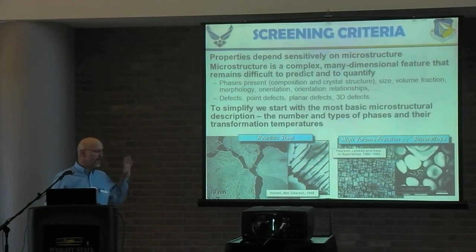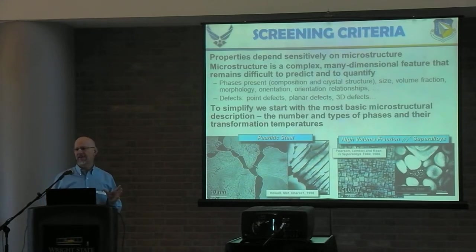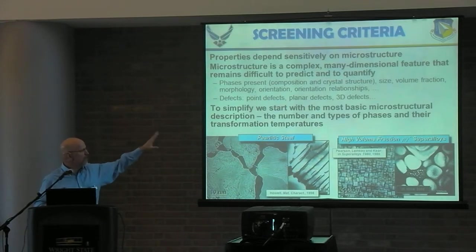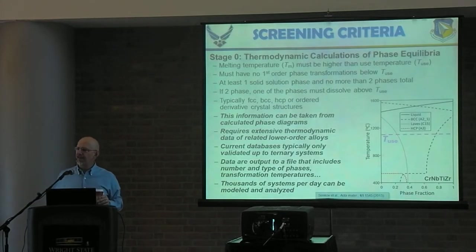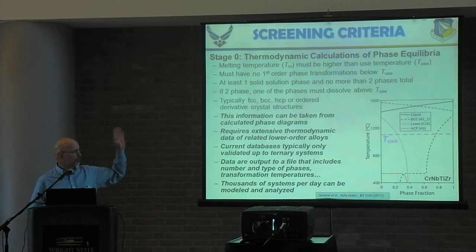If we want to simplify the complexity problem, the first thing we deal with is microstructure. If I say it's a ten-dimensional problem or more, I'm not exaggerating. In our approach, we simplify the microstructure by looking only at the most basic description: how many phases are there, what phases are they, and what are their temperature reactions. This information you can get from phase diagrams. You're used to seeing binary or ternary phase diagrams — I'm showing here a phase diagram for a four-element system.